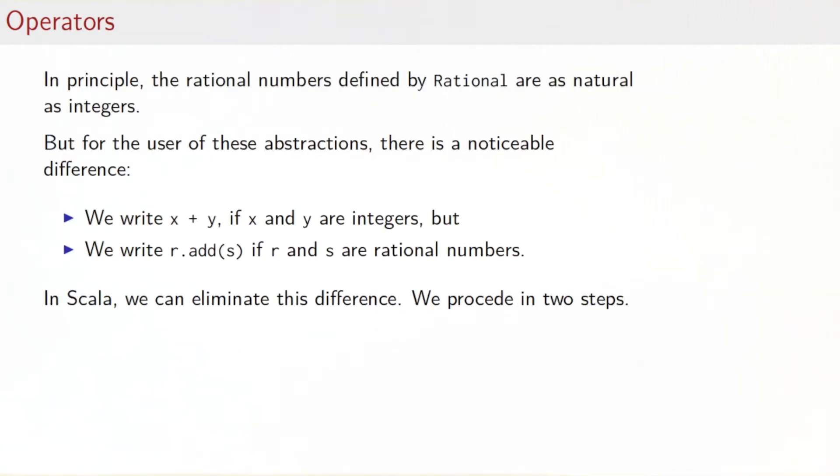One more thing we want to cover this session is operators. In principle, the rational numbers defined by our class are as natural as integers—they're mathematical abstractions just as good as integers. But for the user of these abstractions, there's currently a noticeable difference. If x and y are integers, you write x plus y. But if r and s are rational numbers, you need to write r dot add s. That's not very natural. In Scala, we can eliminate this difference. To do that, we proceed in two steps.